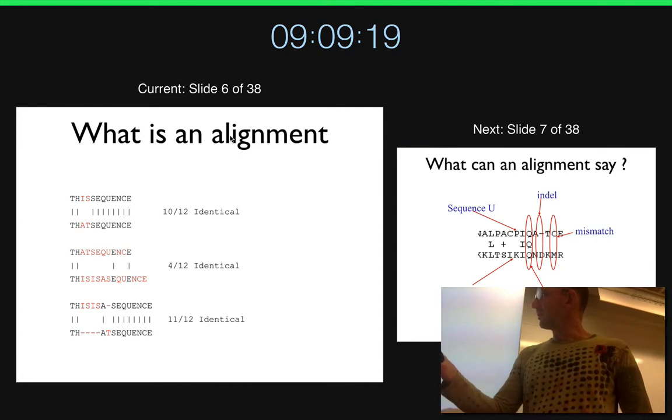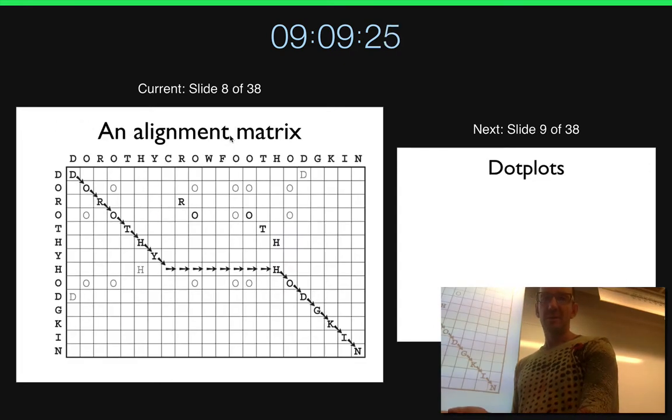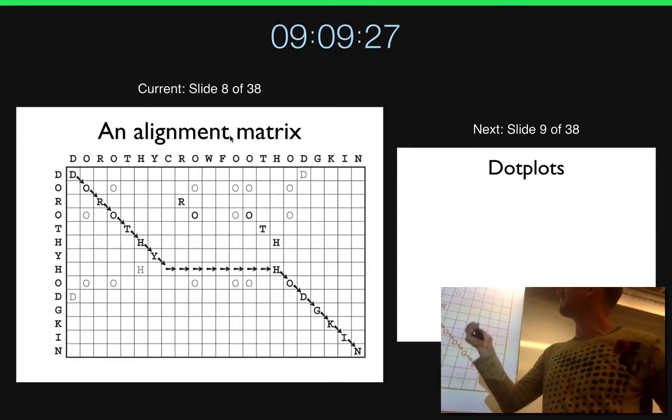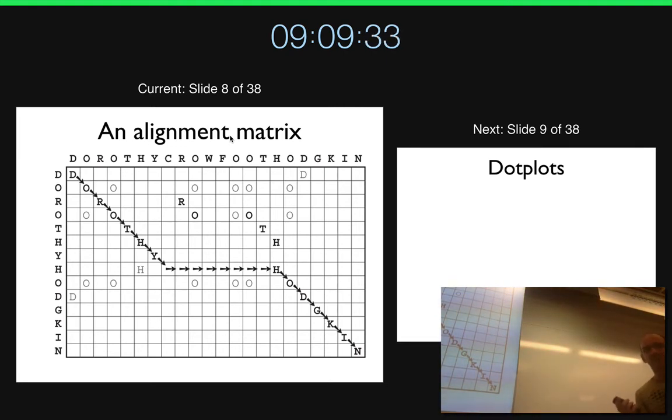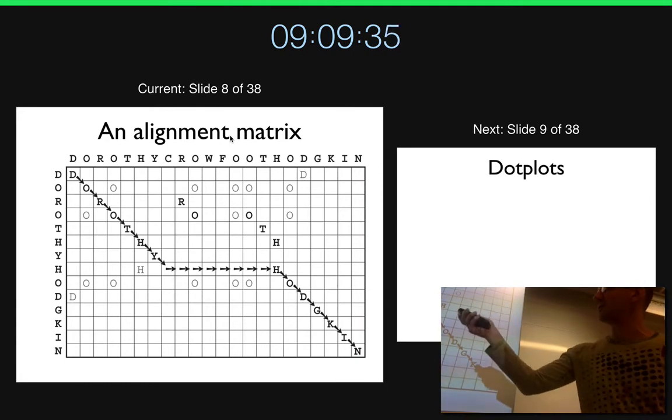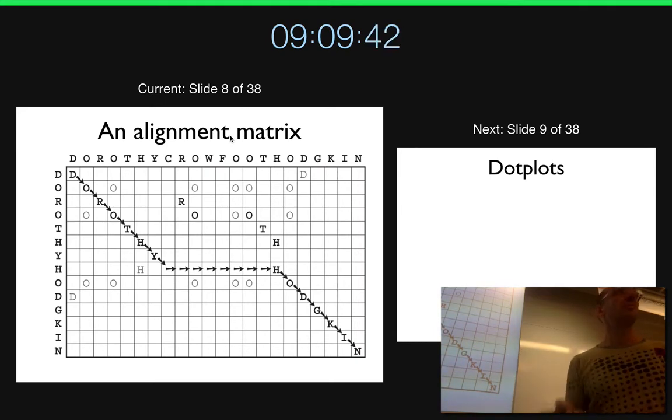The key question is how do we get this alignment? How do we know this is the best alignment? We do that by first representing an alignment like a matrix. This is another way to represent the same thing. We can take this sequence here and this sequence here and align it. As long as you go in a diagonal, you align the positions. As long as you're going vertical or horizontal, you are making a gap in one of the positions.